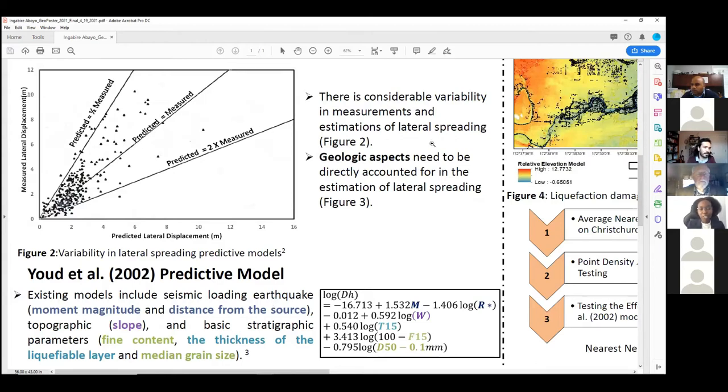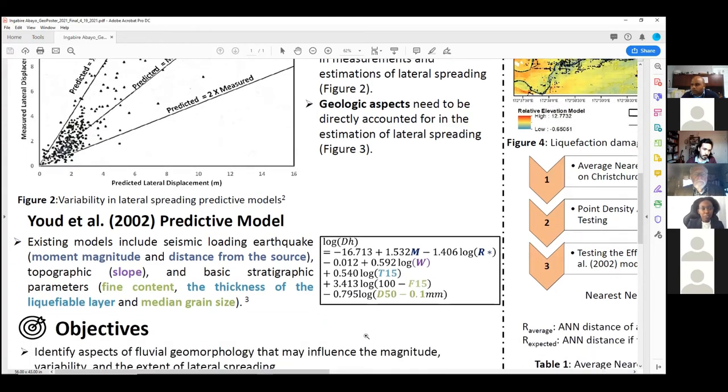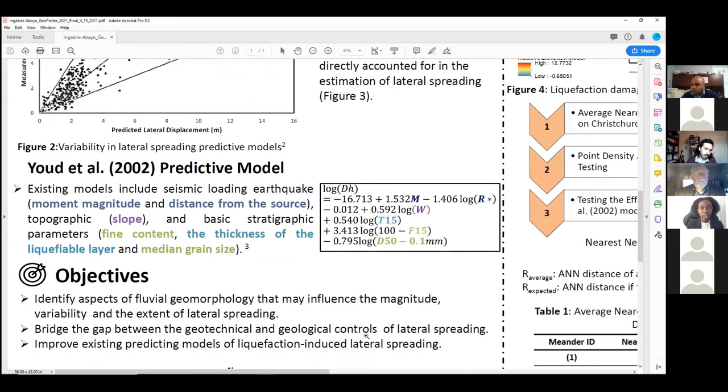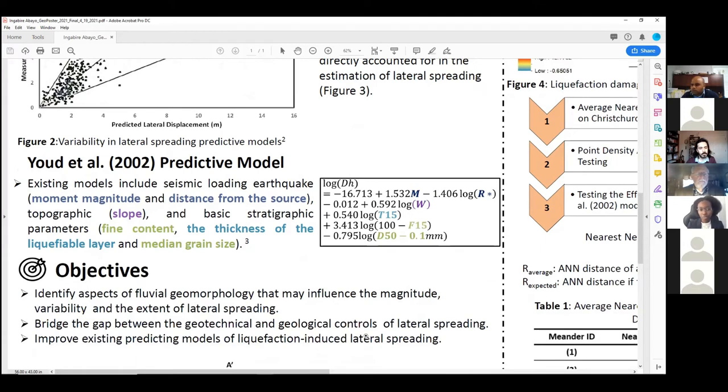We believe that part of this variation can be explained by the fact that current models do not directly account for the influence of certain important geologic factors. Current models do consider certain topographic, basic stratigraphic parameters as color-coded here in this equation. However, there is still a need to explore parameters that can better capture the effect of the deposition processes and environments. To address this, our current focus is on identifying factors that are associated with the deposition processes and environments that can help us improve our models.